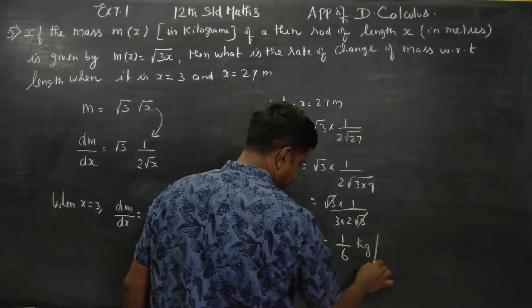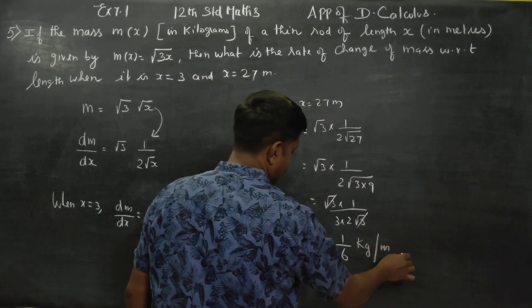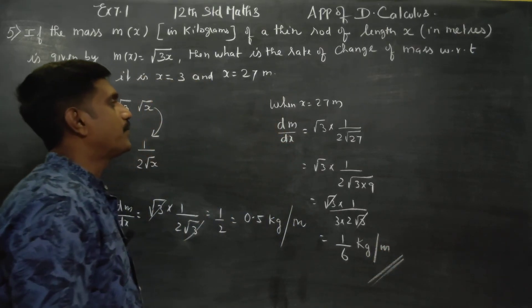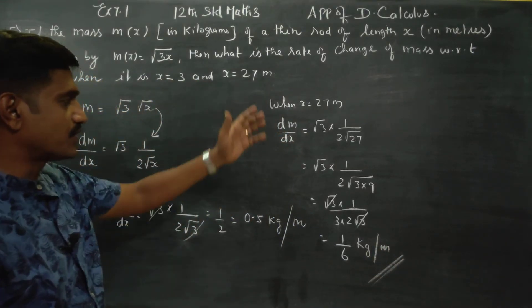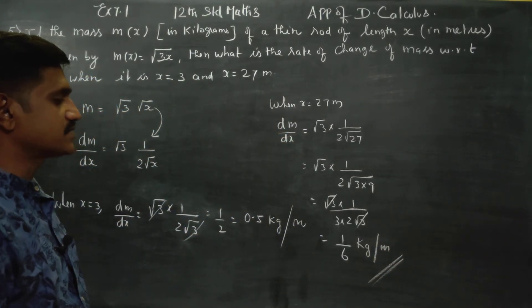The answer is 1/6 kilogram per meter. When x = 27 meters, the rate of change of mass is 1/6 kg per meter.